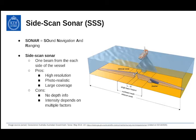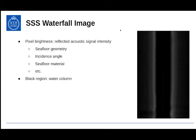But it also comes with disadvantages. Specifically, side scan sonar lacks depth information, which means just by looking at the side scan sonar data, we can't really get the 3D geometry of the seafloor. Another thing is that the intensity of side scan sonar depends on multiple factors. The pixel brightness in the waterfall image is the reflected acoustic signal intensity, mapped to 0 and 1 — black and white. This brightness depends on seafloor geometry, the incidence angle of the acoustic waves, the seafloor material, and so on. This makes direct comparison of side scan sonar images from the same region a bit challenging.